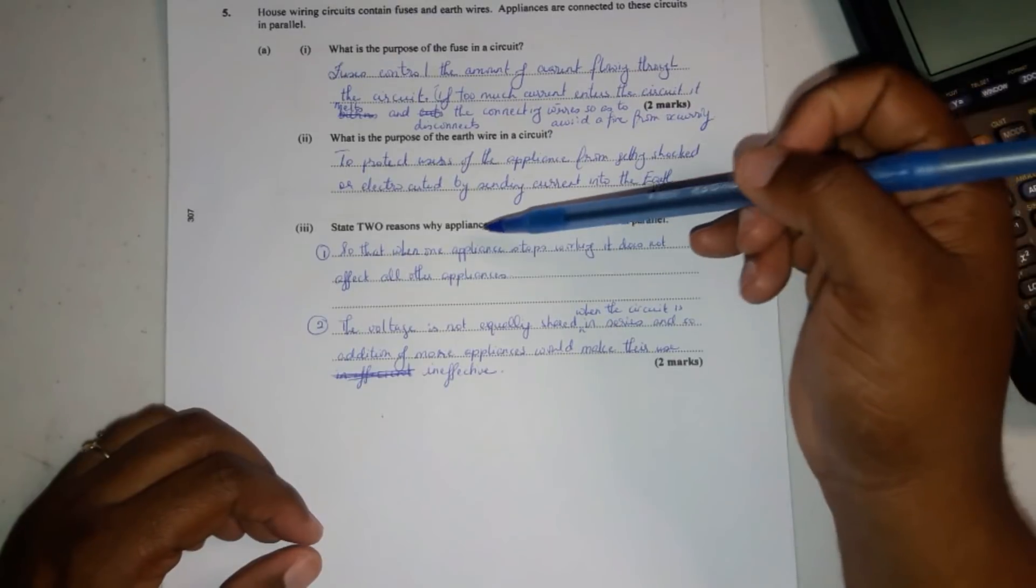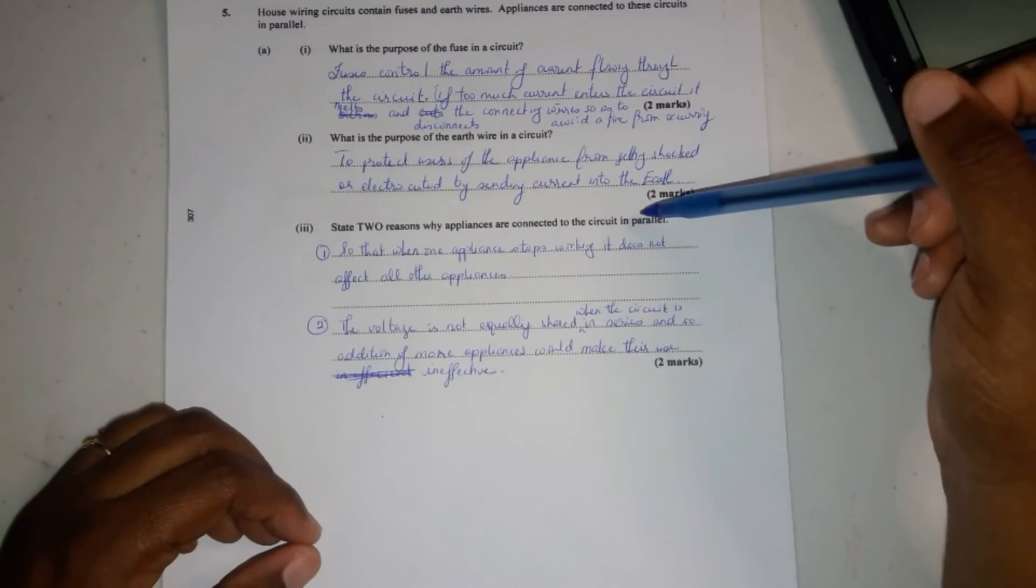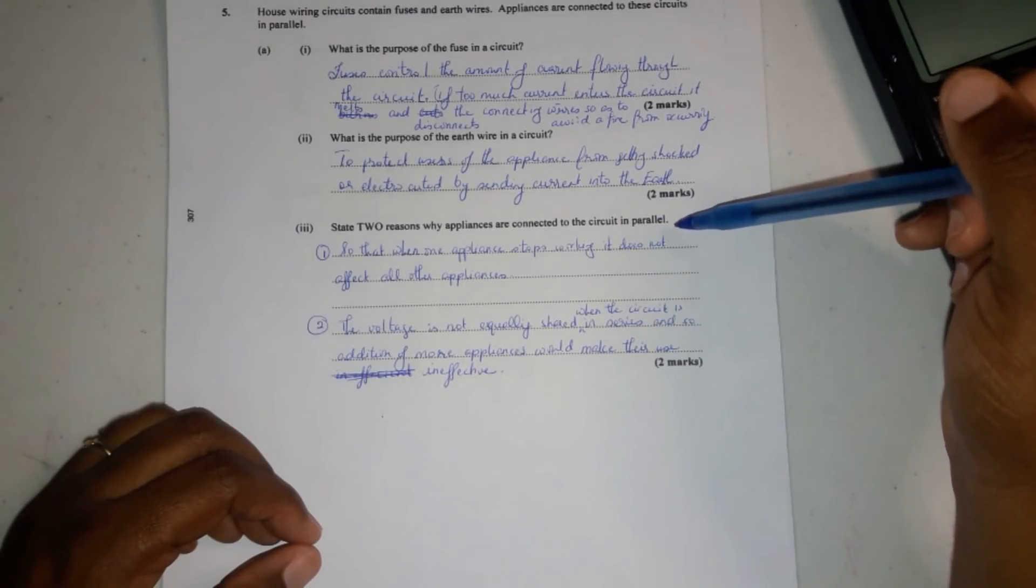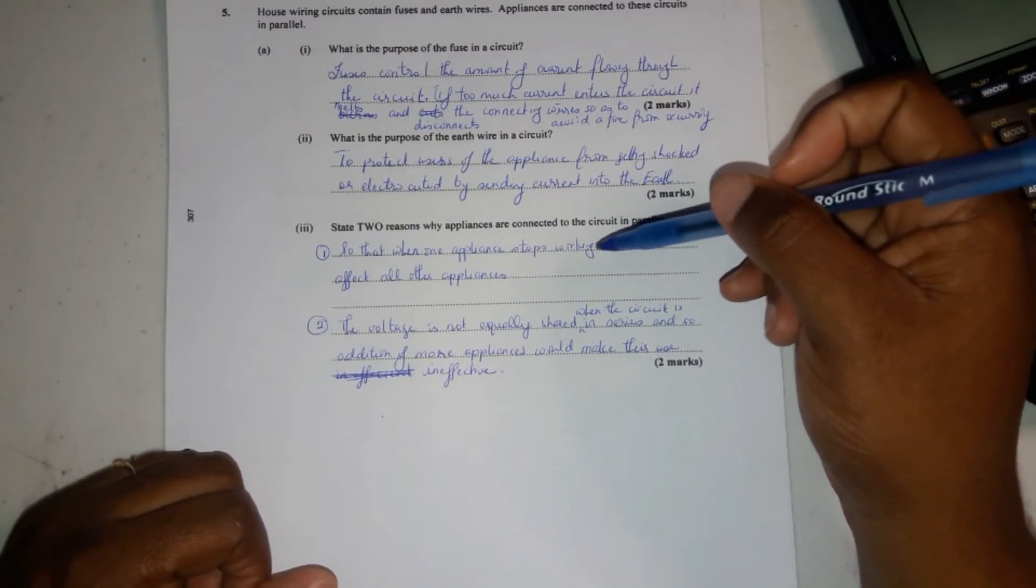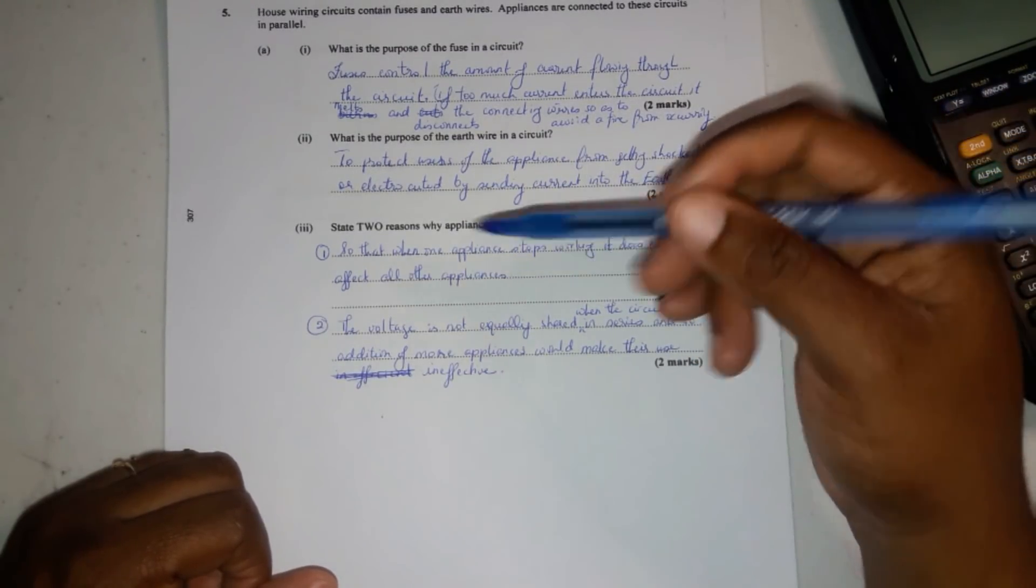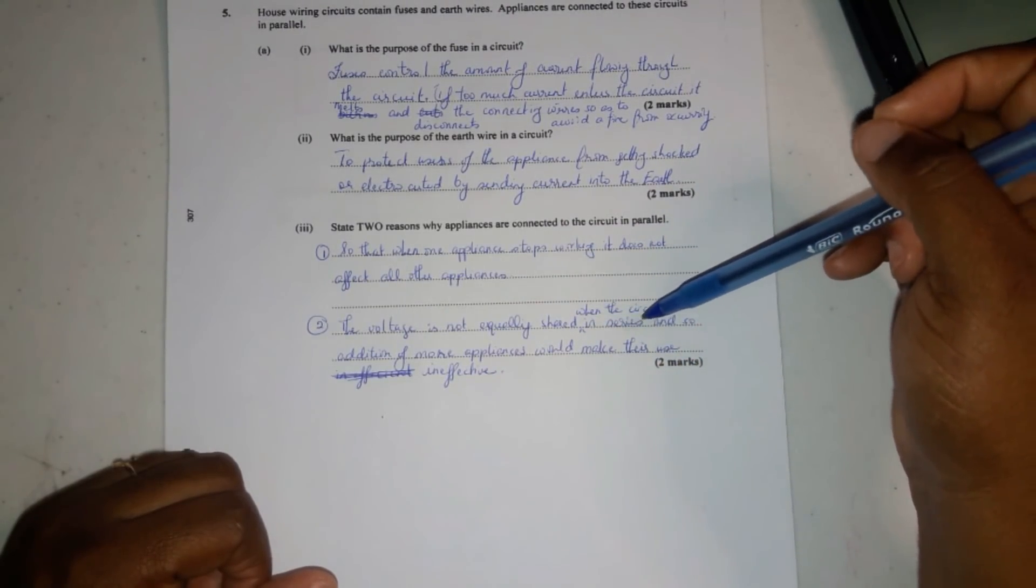Now it says here, 2 reasons why appliances are connected in the circuit in parallel. Number 1, so that when one appliance stops working, it does not affect all the other appliances. And 2, the voltage is not equally shared when the circuit is in series.